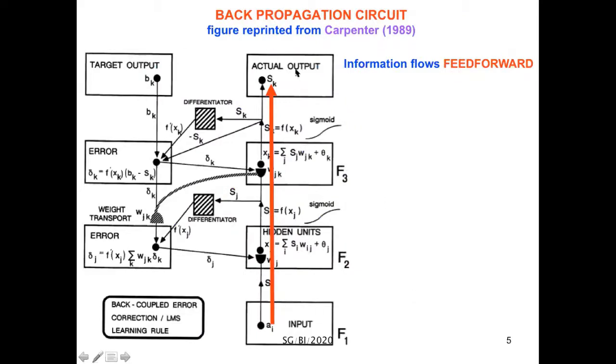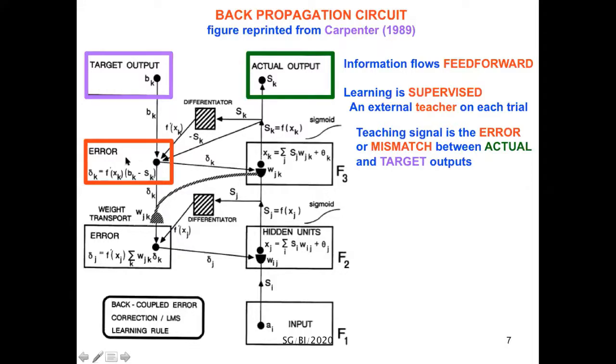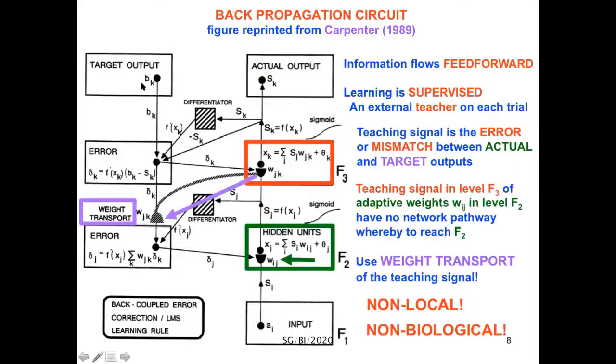Here is a schematic of the backpropagation circuit, a figure printed from Gail Carpenter's 1989 review of neural networks. Information flows feedforward from input to the actual output. Learning is supervised because there's an external teacher who provides a target output on each trial, and the teaching signal is the error or mismatch between the actual and target outputs. But to get the teaching signal computed in level F3 to change the adaptive weights in level F2, there's no network pathway to reach F2. So there's an artifice called weight transport where one physically lifts these weights and transports them so they can be used to learn.